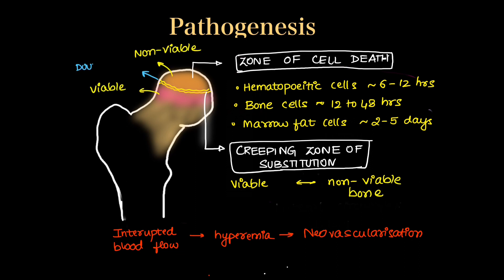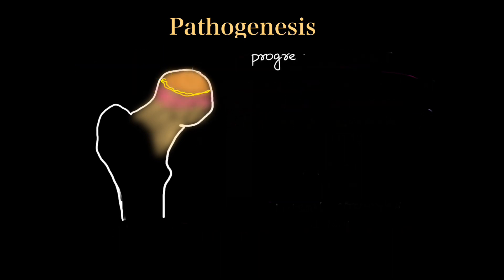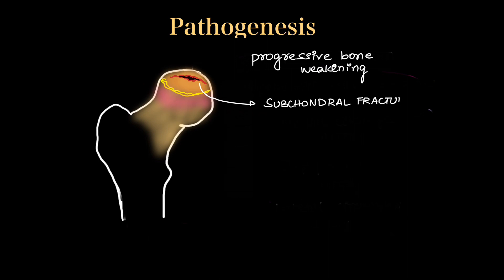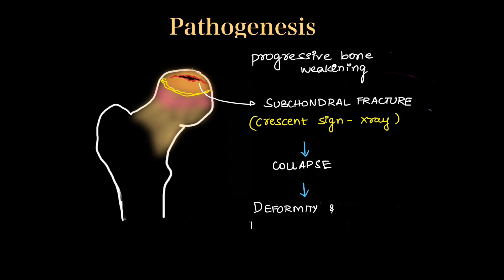This creeping zone appears as the double line sign on MRI, which we will discuss further. The third change is progressive bone weakening: the bone weakens in the zone of cell death and starts necrotizing. The weakened bone undergoes subchondral fractures, seen as the crescent sign on X-ray, further collapsing and leading to deformity and degenerative arthritis in advanced stages.